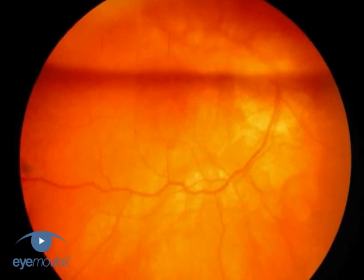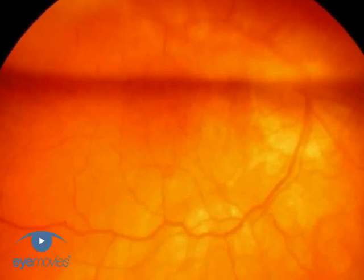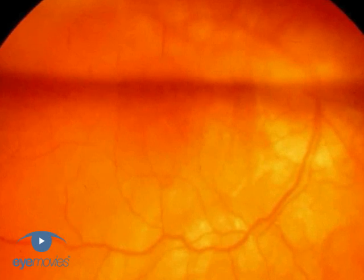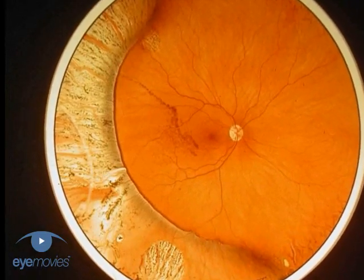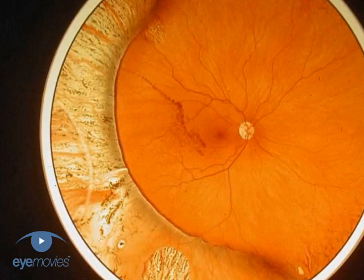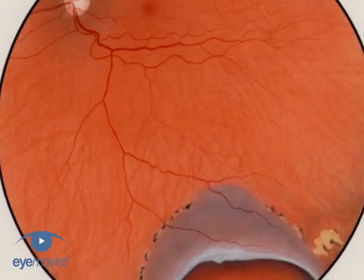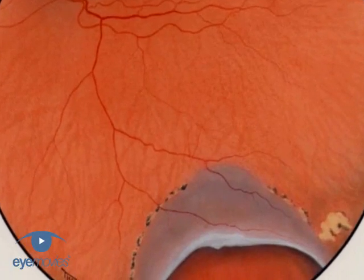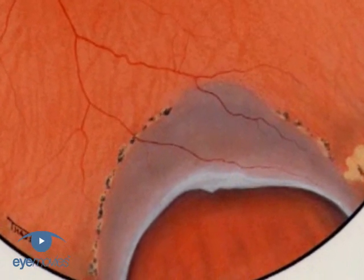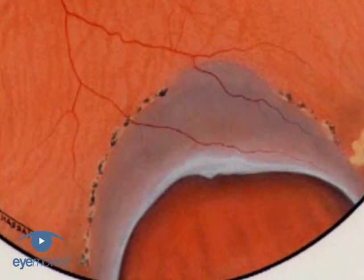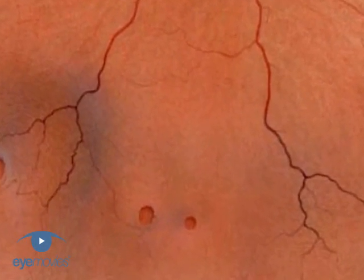While vitrectomy and pneumatic retinopexy are increasingly used for the repair of uncomplicated retinal detachments, scleral buckling still has an important role in certain types of retinal detachment. These include detachments where there is no posterior vitreous separation, such as this dialysis, and this detachment due to inferior round atrophic retinal breaks.